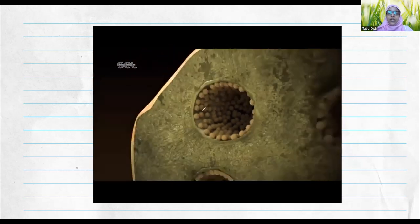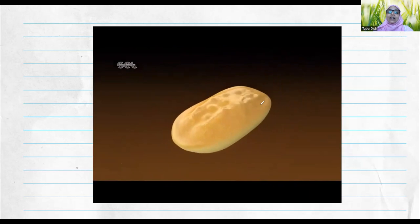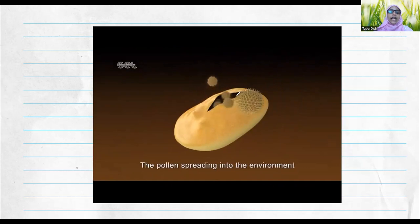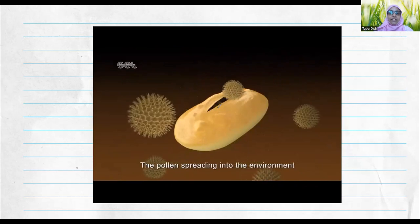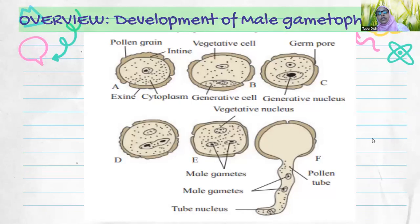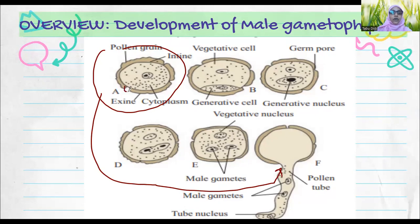When all the pollen grains in the anther are ready, fully matured and developed, they will undergo dehiscence — that is the bursting and opening of the anther and spreading of these pollen grains into the environment — which will fertilize the male reproductive part. Moving on to how the pollen grain will develop into a male gametophyte, ready to fertilize the egg. The pollen grain will develop into a structure — remember the germ pore — germination will happen and a tube will be formed.